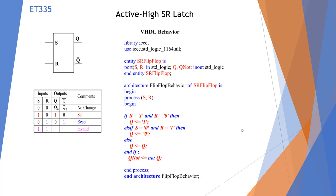Here I have an active high SR latch, but we're going to write it as a behavior. Before we were doing it by schematic; here we're writing code that implements the truth table. We have to make sure SR flip-flop names all match and the right variables are in there. If S equals 1 and R equals 0 then Q is set — the output is going to be 1.